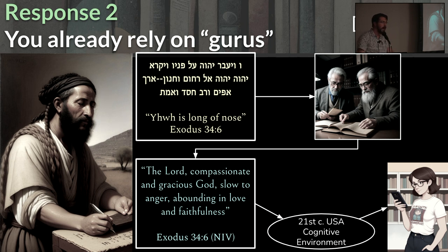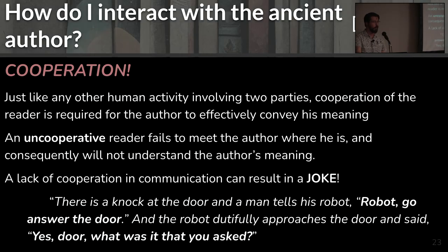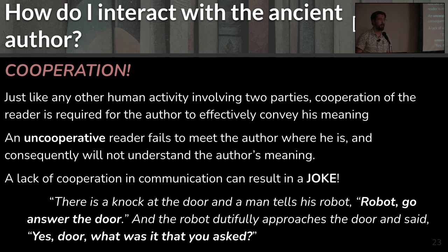How exactly do I interact with this ancient author? The answer is cooperation — we're trying to figure out what he's actually doing. Communication is a two-party activity and it requires you doing your work to understand what he's doing, and he's doing as best he can to communicate to you. If you work against the author or try to impose something on the author instead of letting the author do what he wants to do, then you're going to be misunderstood.